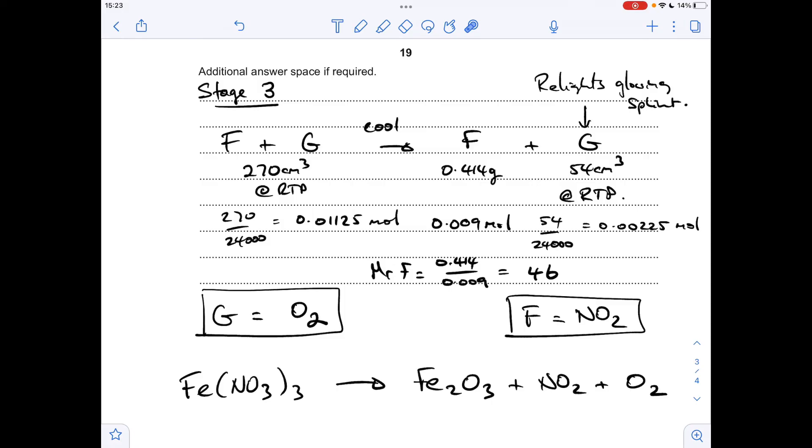So we've established the identity of F. We're now in a position to write the equation for the heating of the iron nitrate. So we know the identities of everything now. Sensible first thing to do is to put a 2 in front of the iron nitrate. That's given us a total of 6 nitrogens. So we'll put a 6 in front of that. So we've got 18 oxygens in total on the left. And from these two, we've got 15 oxygens. So we need another 3 from the O2. So it's 3 over 2 in front of the O2.